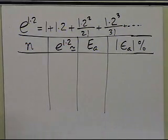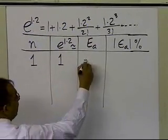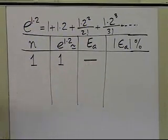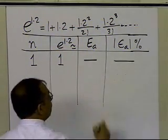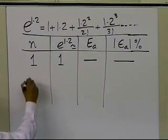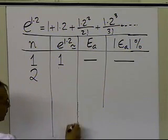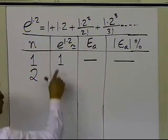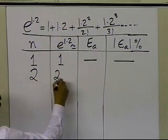If I take one term in the series, e to the power of 1.2 would be just 1. In this case I cannot calculate my approximate error because I don't have a previous approximation, and the relative approximate error also cannot be calculated. If I take two terms, I get 1 plus 1.2, which is 2.2.